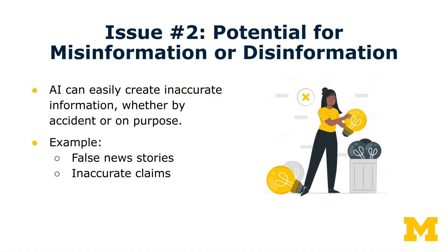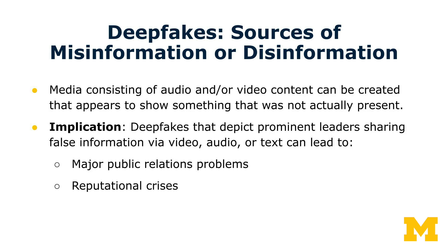A second major concern for trusting AI output is the potential for misinformation or disinformation. AI can easily be used to generate credible-sounding but inaccurate information in the form of news stories or other false claims. A particularly pernicious form of this is what's known as deepfakes, where audio or video content can be created that appears to show something that was not actually present. In some deepfake videos, public figures have been incorporated into scenes that did not actually occur, and AI makes it relatively easy to create and disseminate these sorts of inaccuracies.